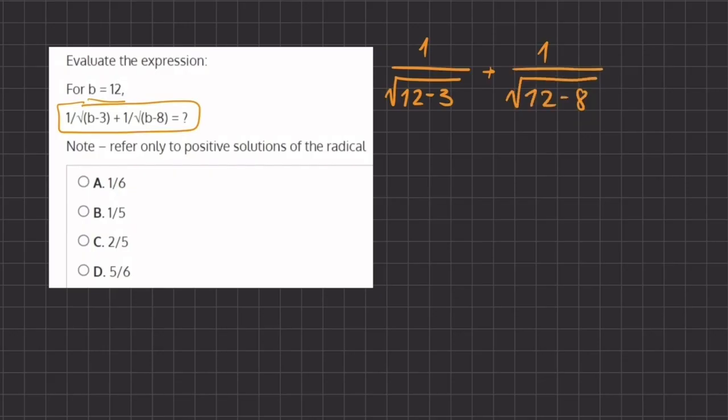Alright, so now let's start simplifying. We have 1 divided by radical, 12 minus 3, which is 9, plus 1 divided by radical, 12 minus 8, which is 4.